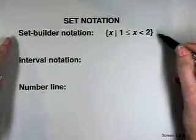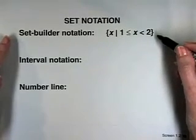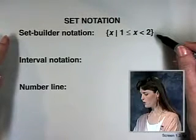First, let's consider some different types of set notation. The first we're going to look at is set-builder notation. This is read: the set of all x such that 1 is less than or equal to x, which is less than 2.